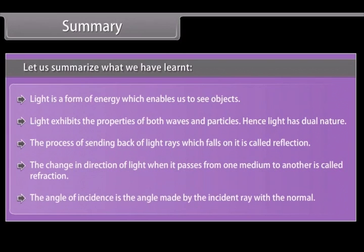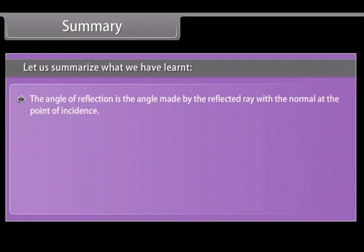The angle of incidence is the angle made by the incident ray with the normal. The angle of reflection is the angle made by the reflected ray with the normal at the point of incidence. The angle of incidence is equal to the angle of reflection.